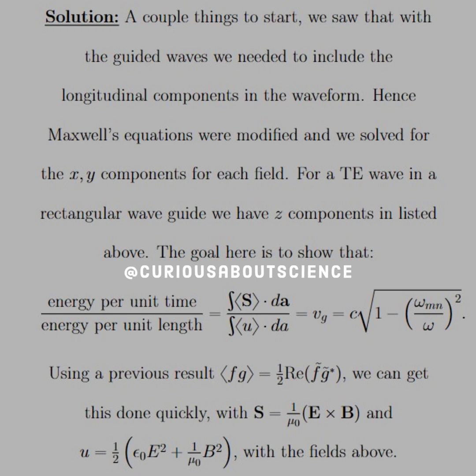Using a previous result, we have that the average value is equal to one half real F tilde times F or G tilde star. We can get this done quickly with S equal one over mu E cross B.